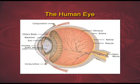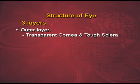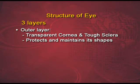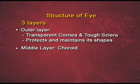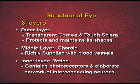Here you can see the structure of a human eye. The human eye broadly is divided into three parts. The outer layer constitutes of a transparent cornea and a tough sclera, which protects and maintains the shape of the eye. The middle layer is the choroid, which is richly supplied with blood vessels. The innermost layer is the retina, which constitutes of photoreceptors and an elaborate network of interconnected neurons.